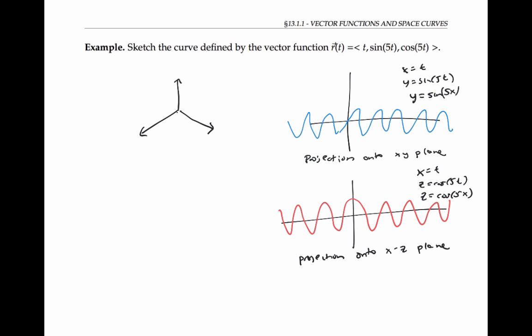Finally, if we ignore the x component and just look at the y and z components, then we're graphing y equals sine of five T, z equals cosine of five T.